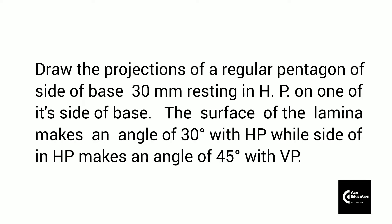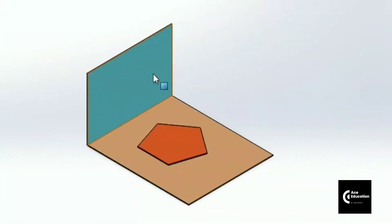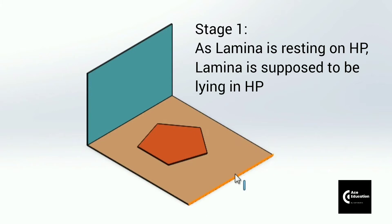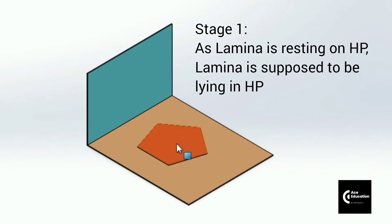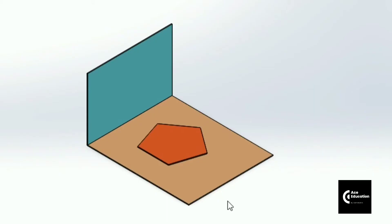We will see how we can project this plane lamina with respect to the XY line — that is, the front view and top view. Here I have taken two planes: one is the vertical plane and the second is the horizontal plane. The lamina is lying on the horizontal plane. As per the given problem, one of its sides of the base is in the horizontal plane, so we take this lamina lying on the horizontal plane in the first stage, then tilt it with respect to the horizontal plane and then the vertical plane.